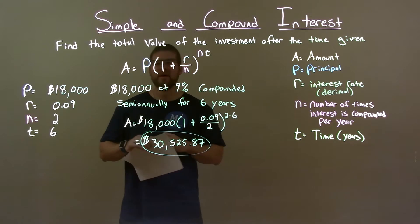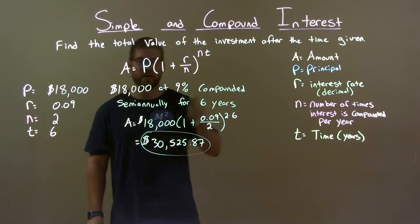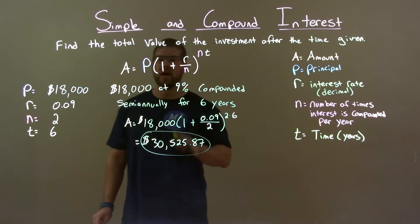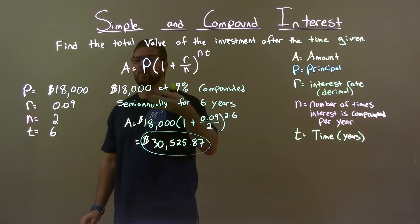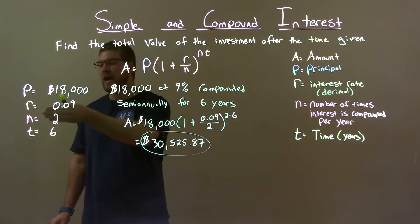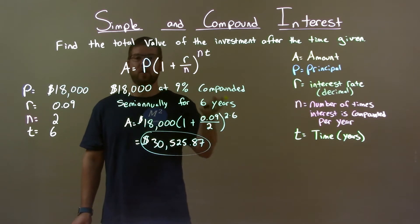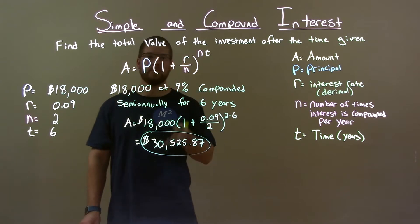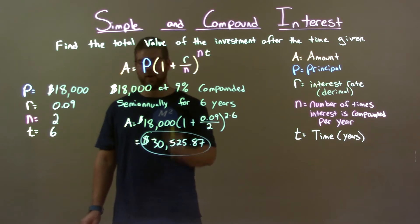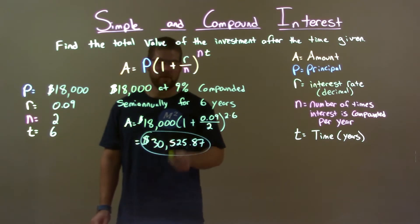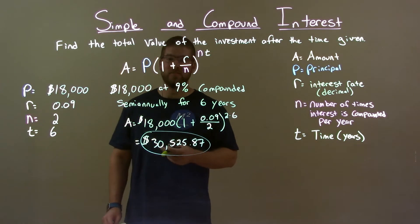Quick recap. We're given $18,000 at 9% compounded semi-annually for 6 years. From that word problem, I extracted my variables for P, R, N, and T and plugged them into my equation. From there, I solved that equation to get our final answer using compound interest, a total value of our investment of $30,525 and 87 cents.